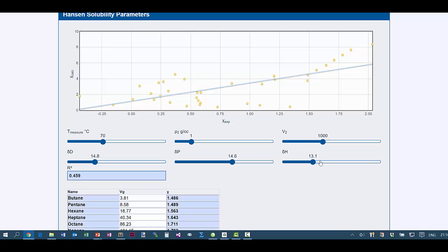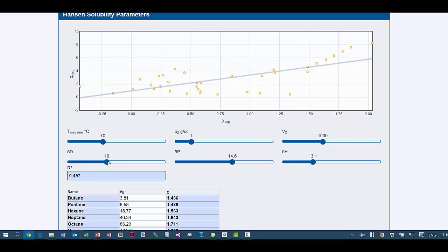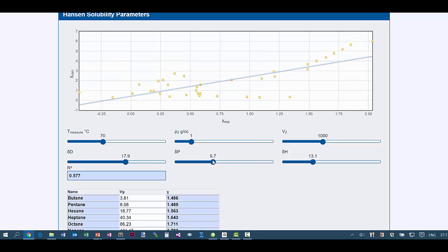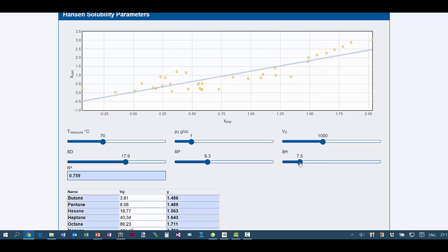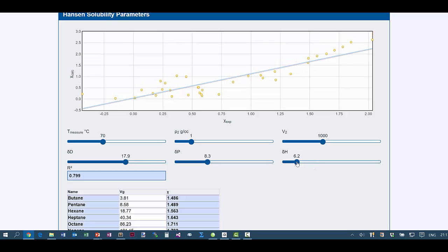Then we have a guesstimate of the D, P, and H values for that polymer. And this is clearly an awful estimate because the correlation is very weak to the human eye, but also the R squared is only 0.46. So let's play around. Now, obviously, in reality, you would use a proper least squares fitting, but it's useful to build up an intuition. As I increase DD, things seem to be getting a bit better. As I decrease DP, things seem to be getting a bit better. And as I decrease DH, things seem to be getting significantly better.